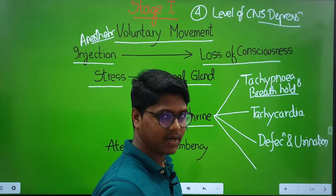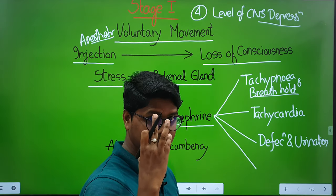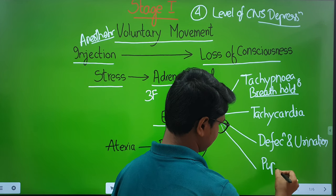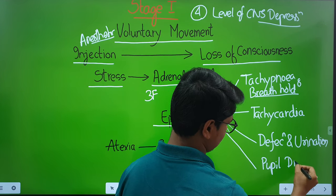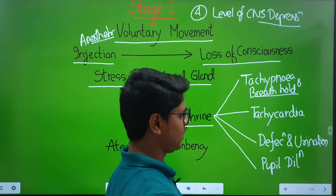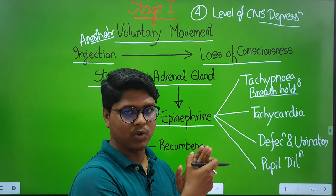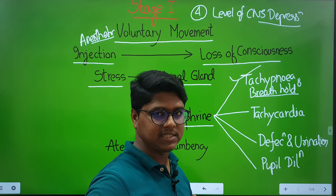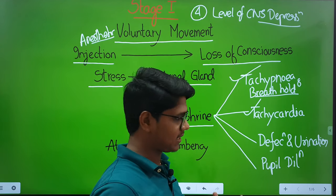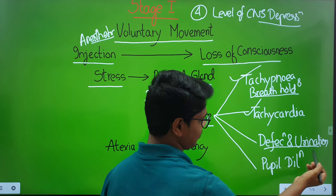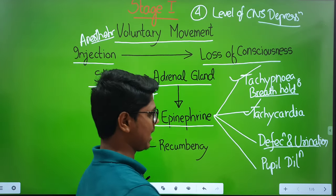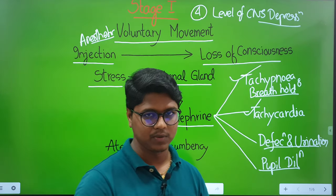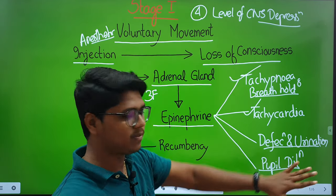In humans you may find dilation of the pupil when frightened, and similarly in animals you will find pupillary dilation. So these are all effects of epinephrine: tachypnea — increase in respiration; tachycardia — increase in heart rate; defecation and urination due to fright as the anal sphincters get relaxed; and then pupillary dilation.